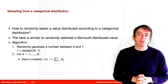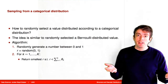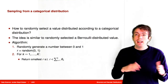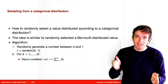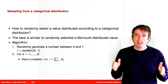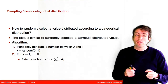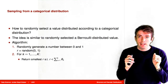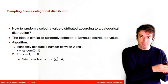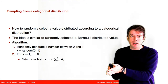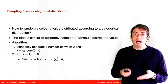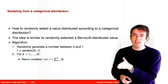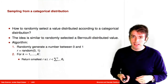Sampling from a categorical distribution is a lot like sampling from a Bernoulli distribution. In the Bernoulli distribution, you have the space between 0 and 1 cut into 2 bits. Now we need to cut it into k bits. What we do is take all of our thetas and at each cut we add the thetas cumulatively: the first cut has the first theta, the second cut has the first and second theta added together, and so on. You then draw a random number between 0 and 1 and see where it lands, choosing the index that it just passed.